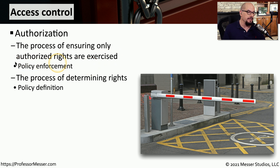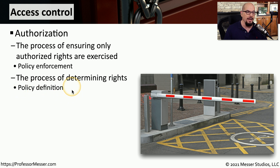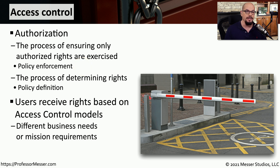Prior to configuring this policy enforcement, we need to go through some process to determine who gains access and what type of access they get. This would be part of our policy definition, and it's something we can use to then assign any type of enforcement process. There are many different ways to configure access control in an application or an operating system, and different businesses and applications have different requirements on how that access is provided.